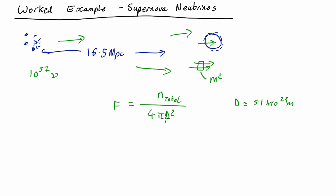Square that, put it at the bottom, 4π. It turns out the flux, 10⁵⁷ divided by 4π times this squared, comes out as about 3 × 10⁸ neutrinos per square metre per second at the Earth, if there was a supernova in the Virgo cluster. So 300 million neutrinos per second going through any given square metre.